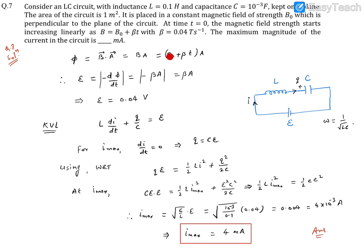Now EMF is dΦ/dt, so we differentiate it. Once you differentiate it, it turns out to be βA. So this EMF will be 0.04, which corresponds to β, times A = 1. So a 0.04 volt battery will be there, and this is going to be constant, so it is not going to change.